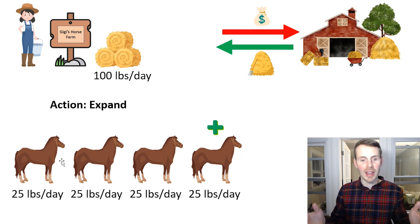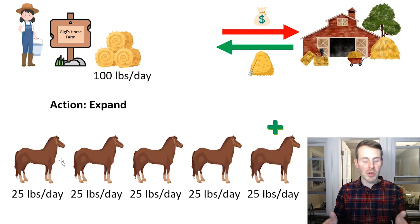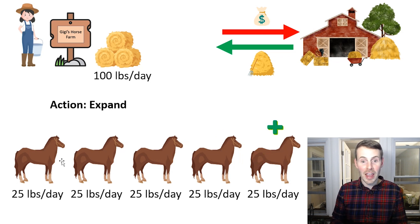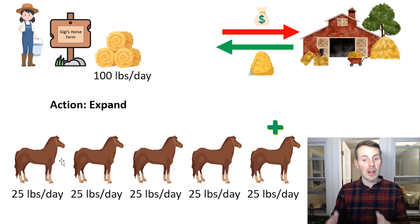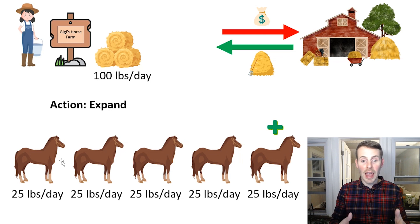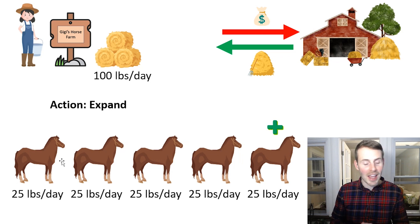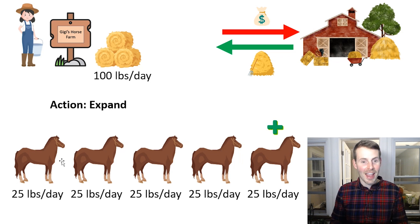Business is booming. Word's getting out around town of how great Gigi's sleigh rides are, so she wants to go ahead and get another horse. She adds a fifth horse to her fleet, but then she starts to run into some issues. She's getting delivered 100 pounds of hay per day, but between her five horses, they need 125 pounds of hay in order to maintain high performance. There's not enough hay to feed all five horses. Their performance starts to slip, their sleigh rides get a lot slower, and the customers start to notice. As a result, she starts to get some poor reviews for her business.